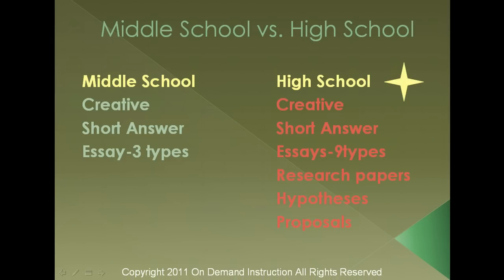Let's take a look at the different kinds of assignments that you would expect to see in middle school and in high school. In middle school, students will typically see creative assignments like short stories and poetry. Students will also be expected to write short answers, typically in the one to two paragraph range. And middle school students can expect to see essays of three different types: persuasive essays, expository essays, and narrative essays.